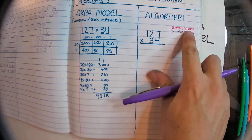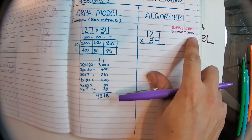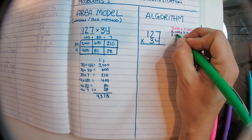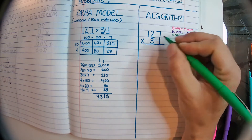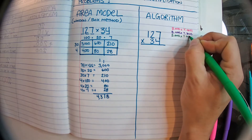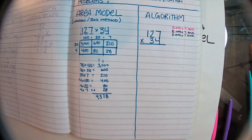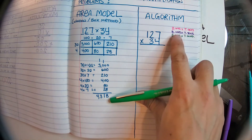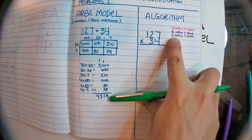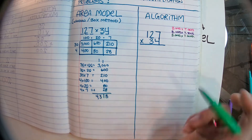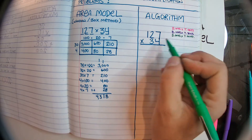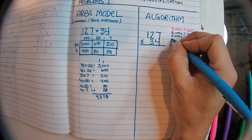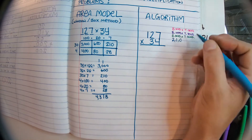So we have bottom ones times top ones, bottom ones times top tens. What do you think comes next? If you said bottom ones times top hundreds, you are correct. To abbreviate: B ones times T ones, B ones times T tens, B ones times T hundreds — where B stands for bottom and T stands for top.